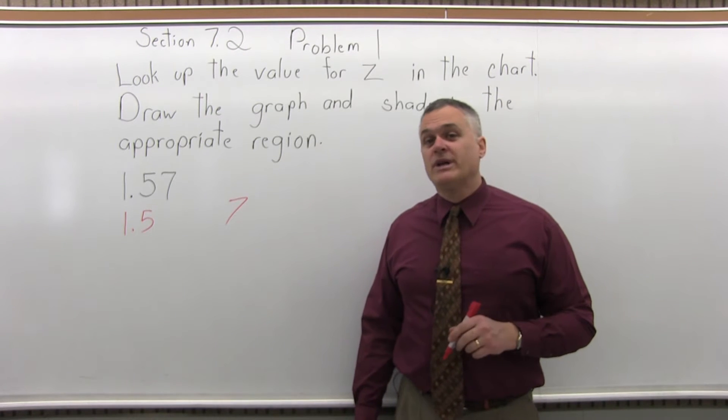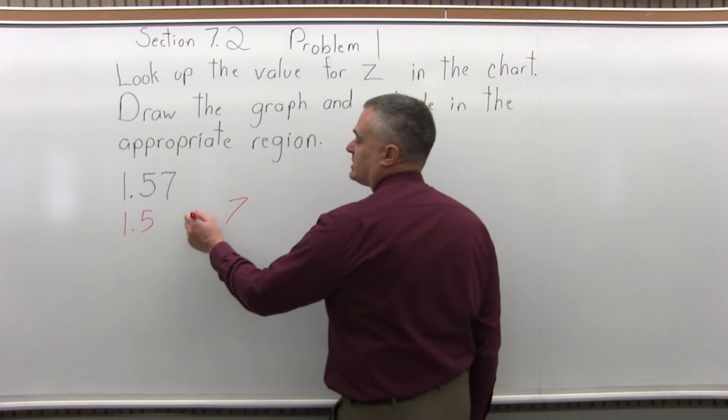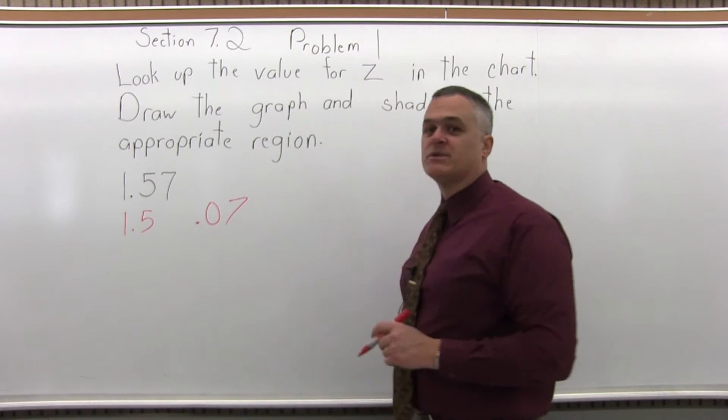Step 3: put a .0 in front of the rightmost digit that you pulled off. So that 7 becomes a .07.